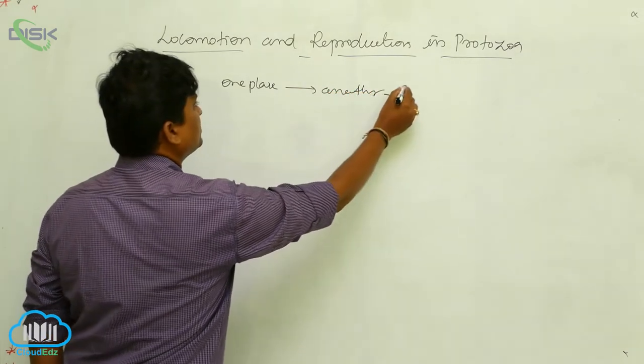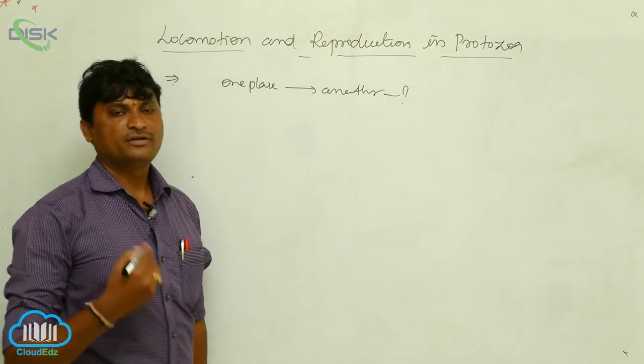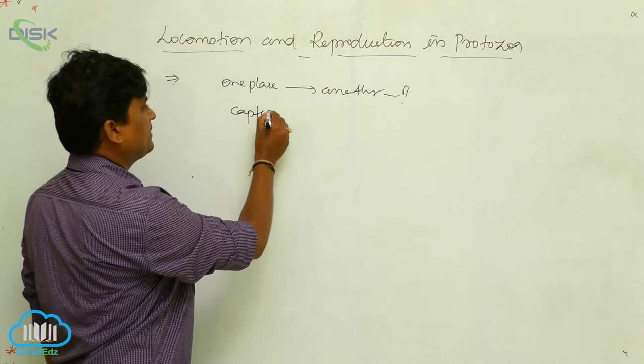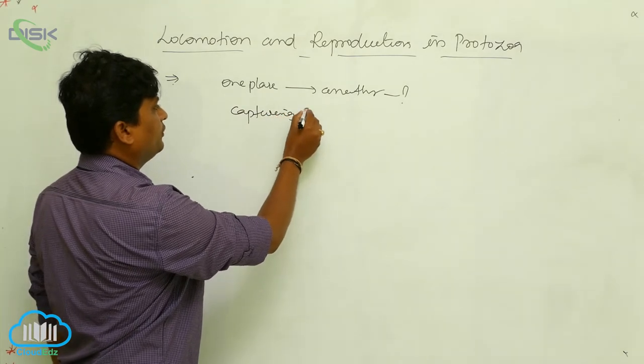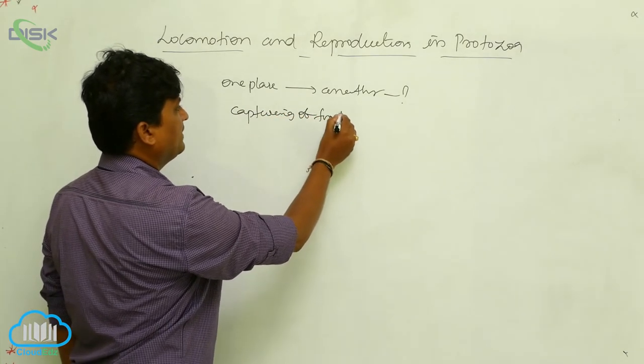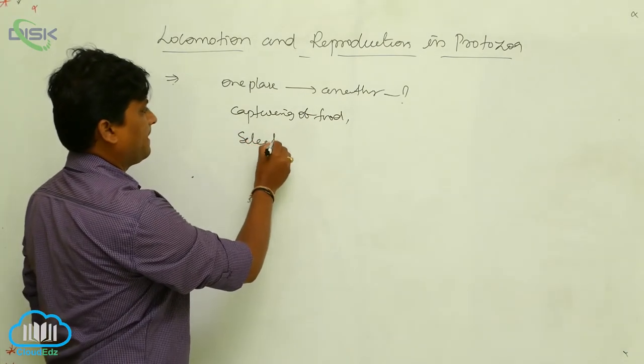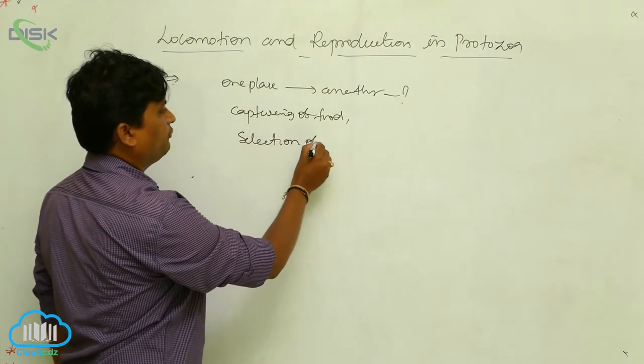For what do organisms show locomotion? Organisms show locomotion for capturing of food material. Capturing of food material. Second one goes to selection of mating. Selection of mating.